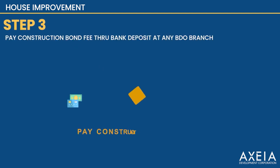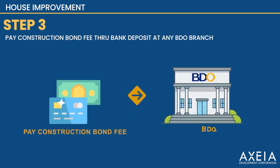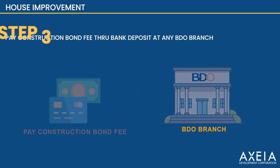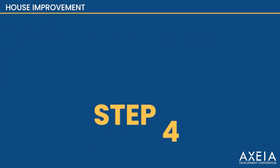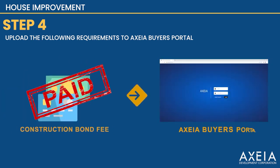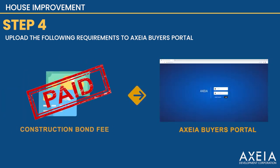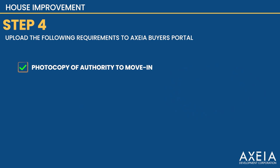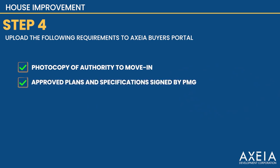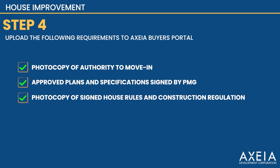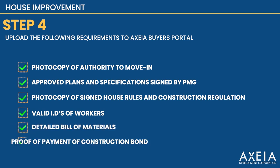Step 3. Pay the Construction Bond Fee through Bank Deposit at any BDO Branch. Step 4. Once paid, go to the Buyer's Portal and upload the following requirements: photocopy of authority to move-in, approved plans and specifications signed by the Property Management Group, photocopy of signed house rules and construction regulation, valid IDs of workers, detailed bill of materials, and proof of payment of construction bond.